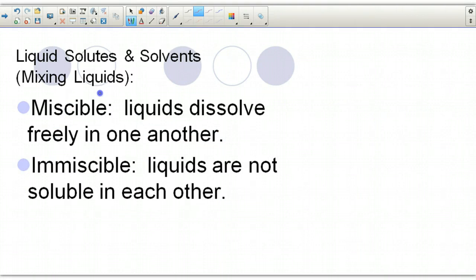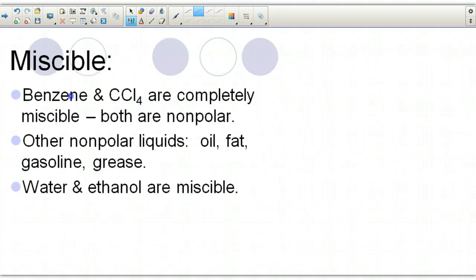Liquid solutes and solvents. What's mixing? Again, miscible is when liquids will dissolve freely in one another and immiscible is when liquids are not soluble in each other. Benzene and carbon tetrachloride are both non-polar, therefore they will mix with each other. They are miscible.